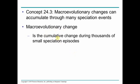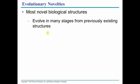We already talked about macroevolution — it occurs because of many thousands of small speciation episodes. Very small incremental changes can cause macroevolution. I suppose this favors more of the gradualism model.